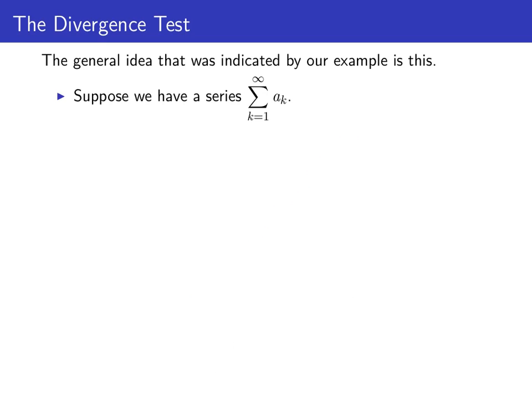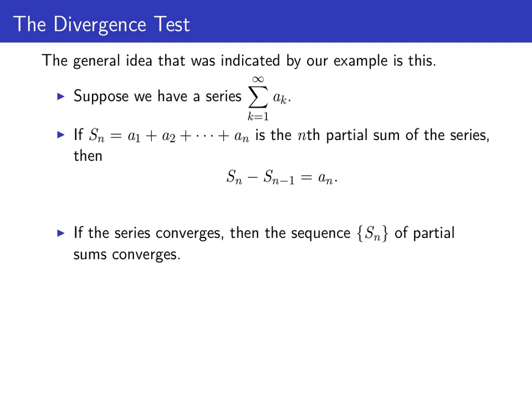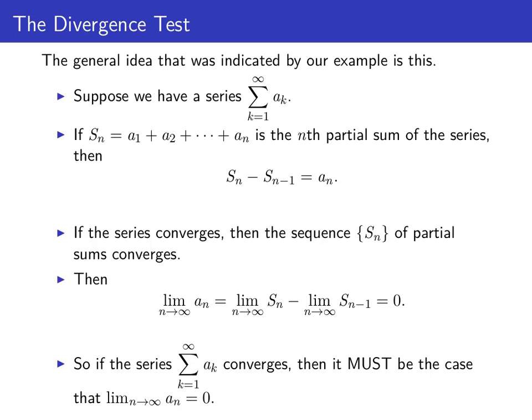The general idea from our example is this. Suppose we have a series sum a sub k as k goes from 1 to infinity, and s sub n is the n-th partial sum. Then S sub n minus S sub n minus 1 equals a sub n. So if the series a sub k converges, then the sequence of partial sums converges, meaning the limit of S sub n minus S sub n minus 1 as n goes to infinity equals the limit of a sub n. Since S sub n and S sub n minus 1 both converge to the same value, the limit of their difference is 0. Therefore, if the series a sub k converges, then the sequence of n-th terms a sub n must converge to 0.